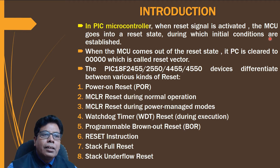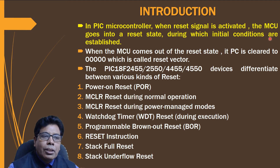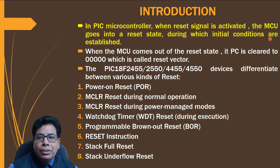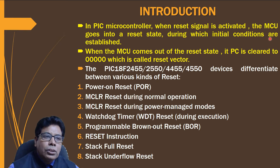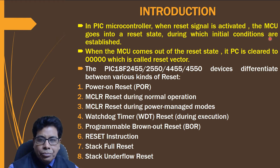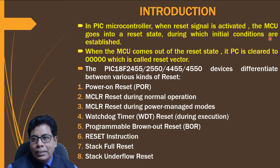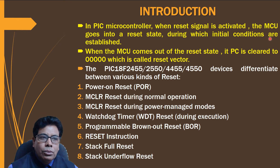Let us start with the introduction. When the reset signal is activated, the MCU microcontroller unit goes into the reset state, during which initial conditions are established. When the MCU comes out of the reset state, its program counter is cleared to 0x000000, which is called the reset vector. After the reset, the MCU begins execution of instructions from location 0x000000h.